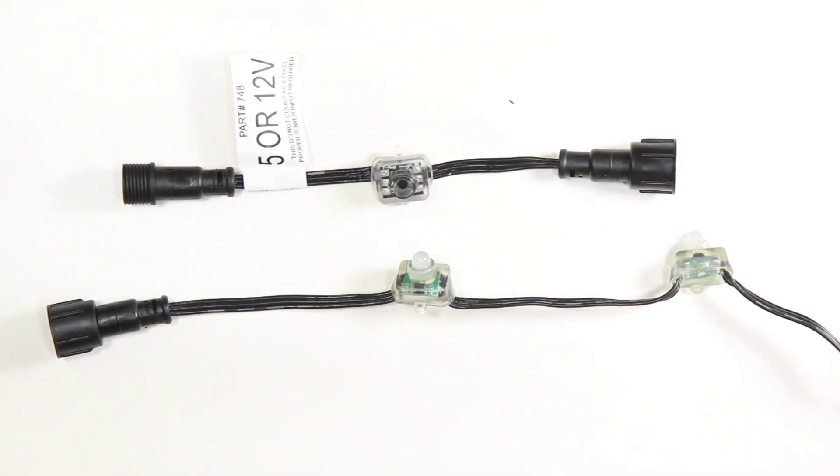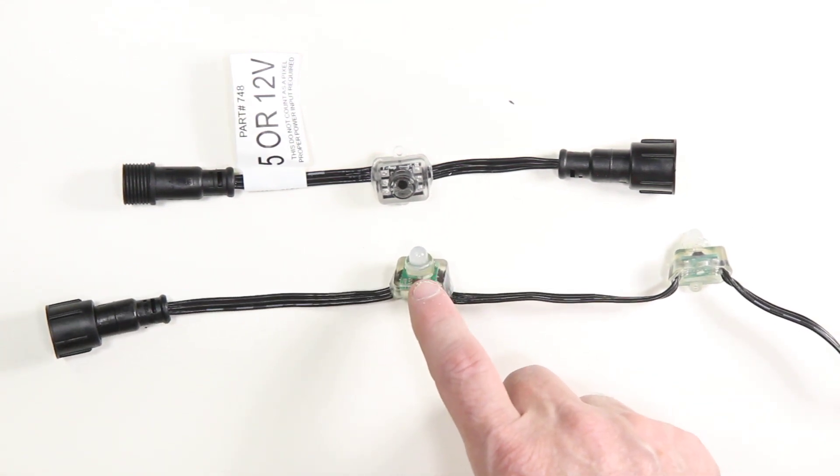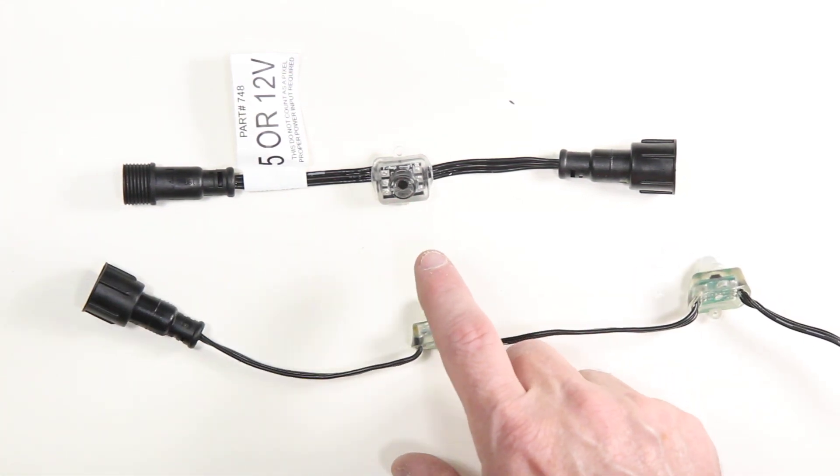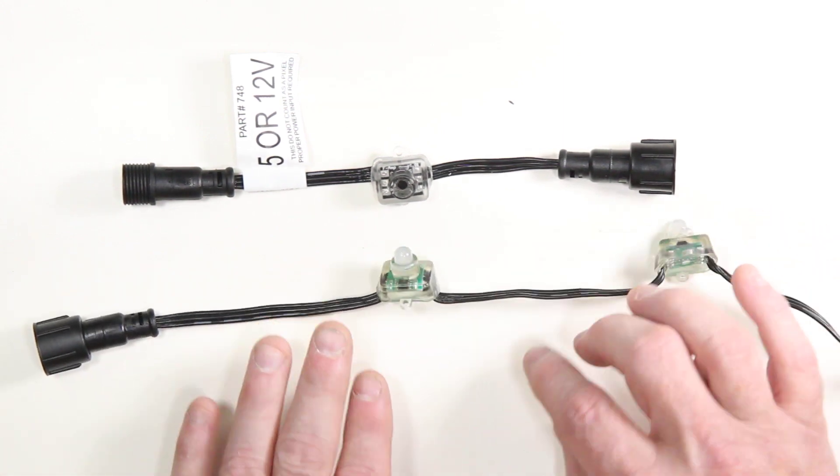You can also see this in examples such as wall warts. Those black boxes that you plug into the wall, they have a transformer, and they're converting 120 volts to 5 or 12 volts. That allows the power to be dropped, and they result in output of heat at that transformer. That's why a 12 volt pixel will almost always be warmer than a 5 volt pixel.